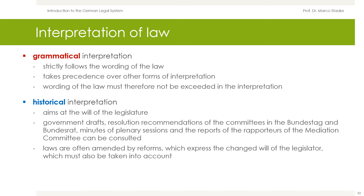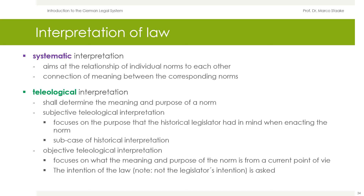The systematic interpretation aims at the relationship of individual norms to each other. The overall view of the norms in relation to each other in the law or in the sections of the law is considered, and there must be a connection of meaning between the corresponding norms. A look at the title of the norm, the title of the section in which the norm is found, and at nearby norms is particularly helpful. In the same way, the position at the beginning or at the end of a law can provide information as to whether a norm applies to several sections or what meaning the norm should have in general.